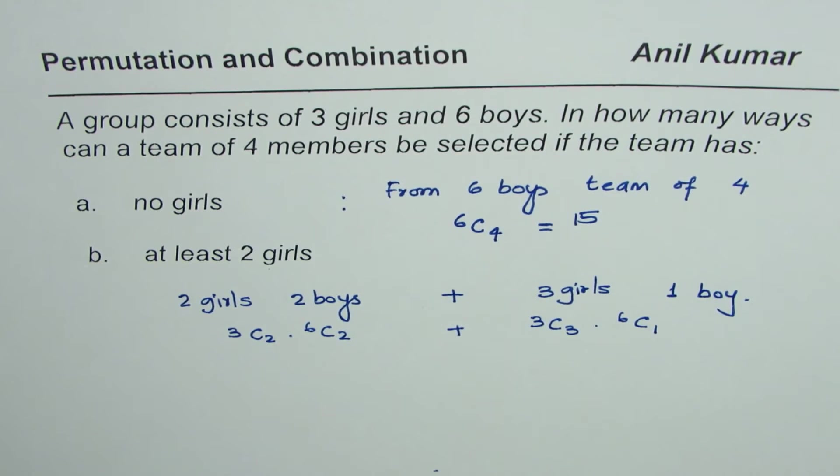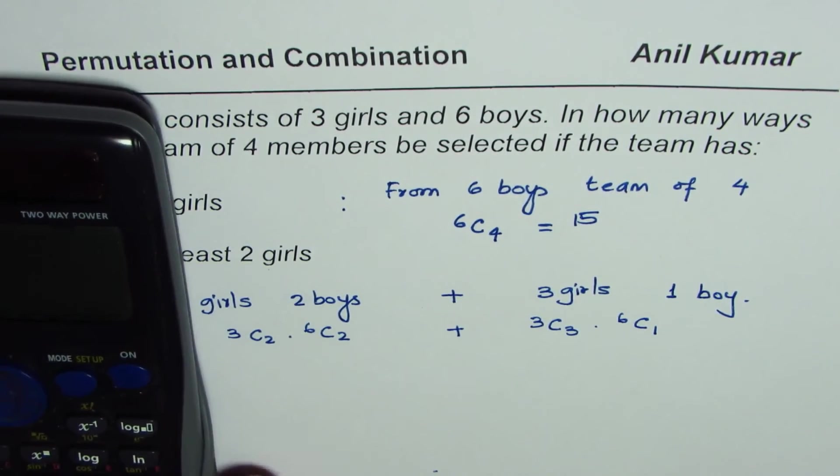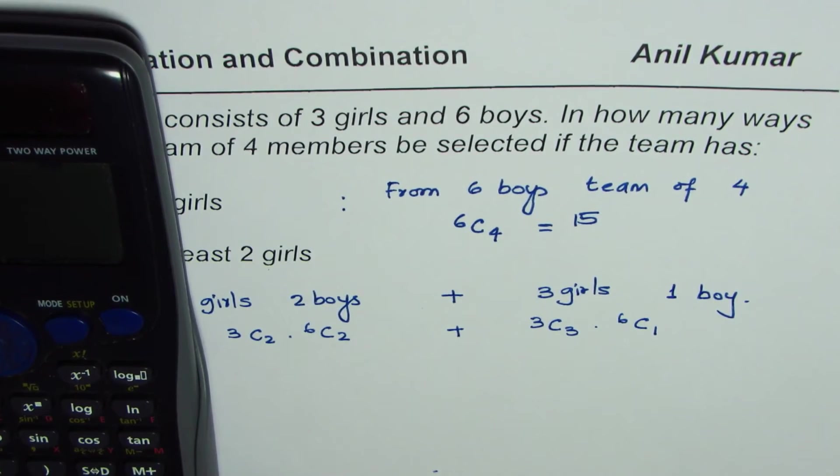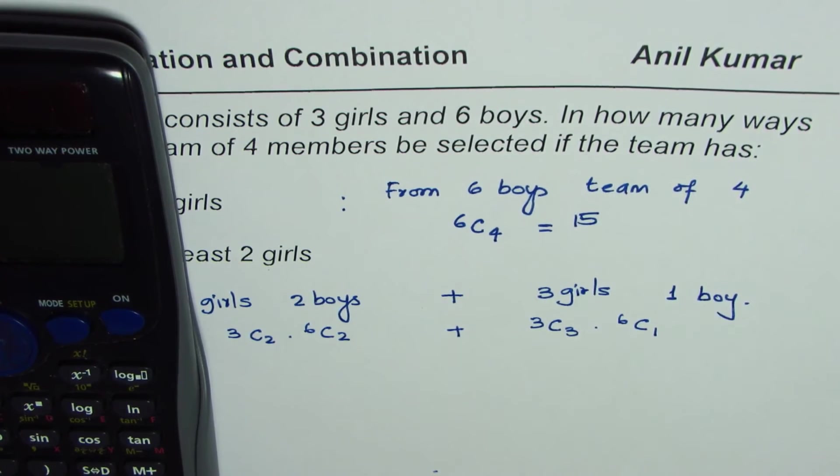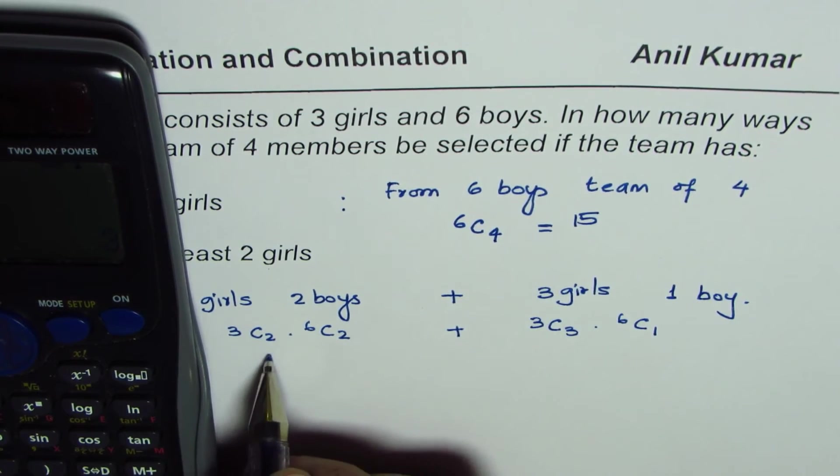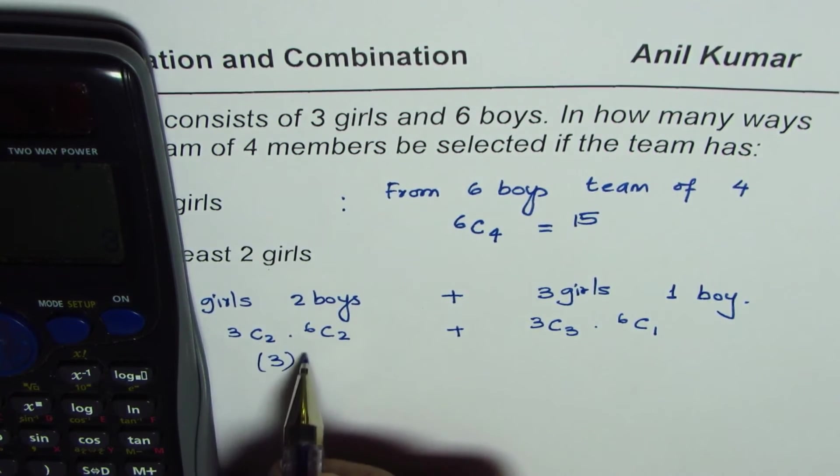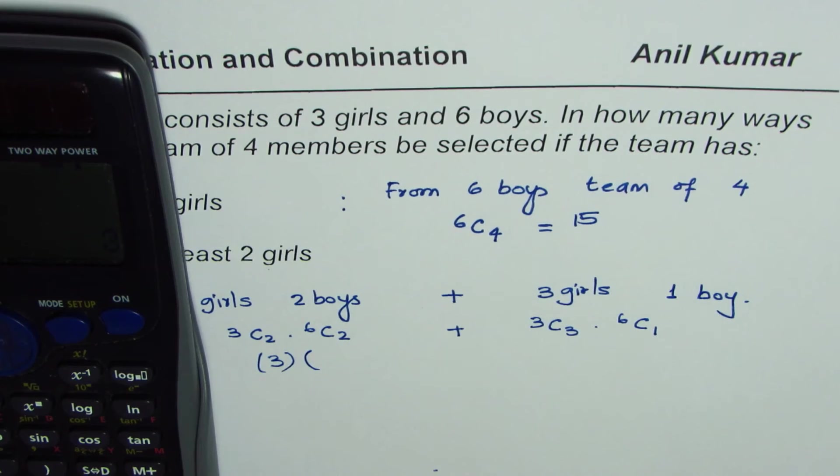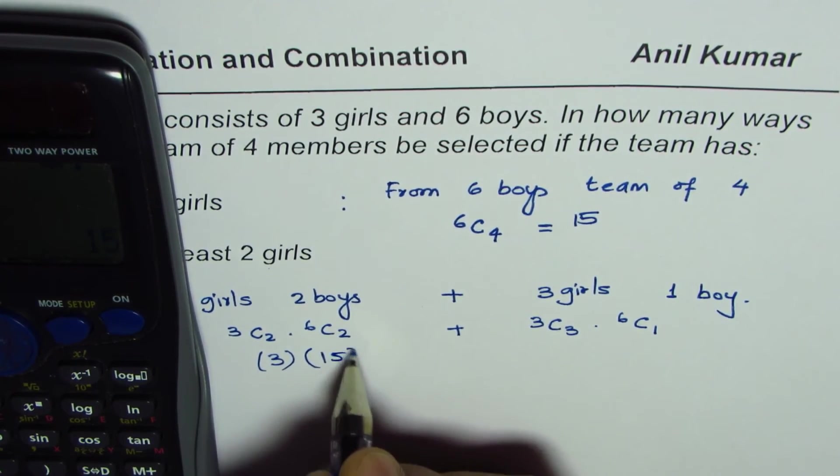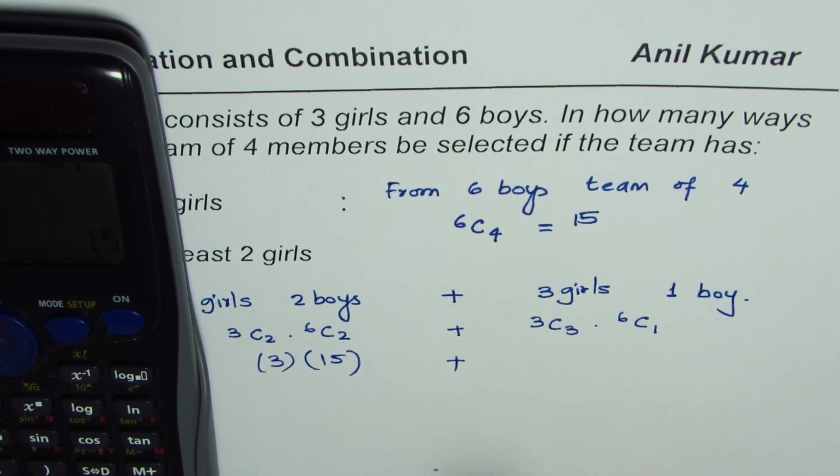So let's use the calculator. Find the answer. We have three C two. So three C two equals to three. We get three here times six C two, so six C two, that equals to 15 plus three C three.